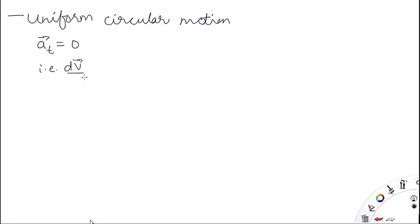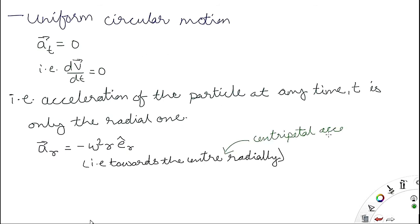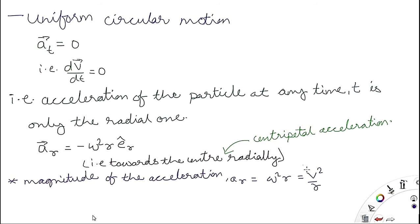In uniform circular motion, the velocity is constant in magnitude — only its direction changes. Therefore the tangential acceleration dV/dt = 0, meaning V = constant. The acceleration of the particle has only the radial component, represented by −ω²·R·er, which is the centripetal acceleration directed towards the center.